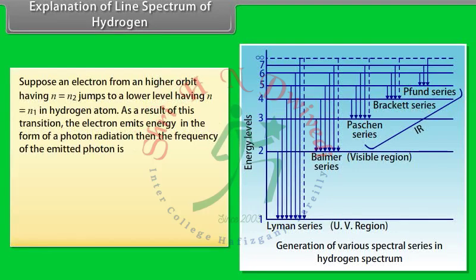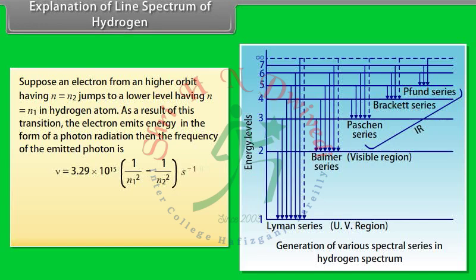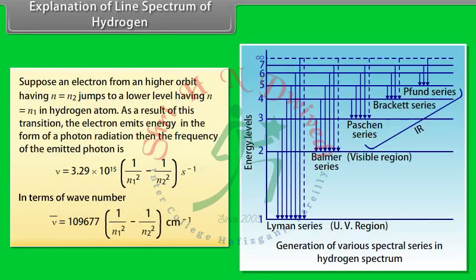Suppose an electron from a higher orbit n = n₂ jumps to a lower energy level n = n₁ in the hydrogen atom. As a result of this transition, the electron emits energy as a photon. The frequency of the emitted photon is: nu = 3.29 × 10¹⁵ × (1/n₁² − 1/n₂²) per second. In terms of wave number: 109,677 × (1/n₁² − 1/n₂²) per centimetre.